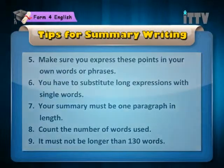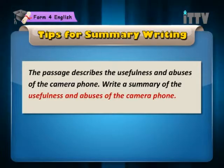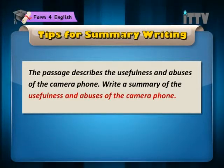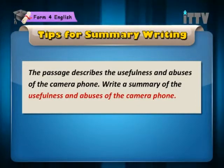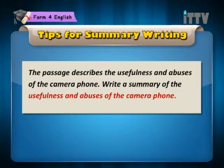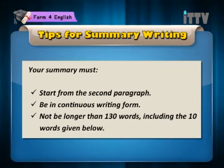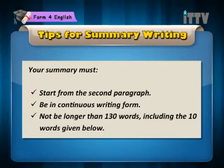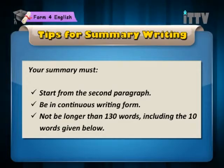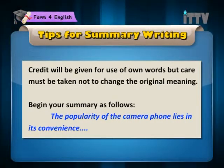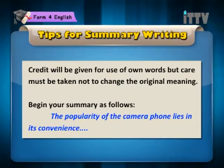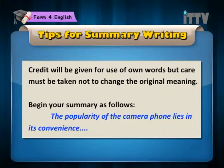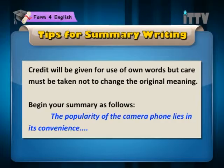Now, let's take a look at the summary question that we will be doing today. The passage describes the usefulness and abuses of the camera phone. Write a summary of the usefulness and abuses of the camera phone. Your summary must start from the second paragraph, be in continuous writing form, not be longer than 130 words including the 10 words given below. Credit will be given for the use of own words, but care must be taken not to change the original meaning. Begin your summary as follows: The popularity of the camera phone lies in its convenience.